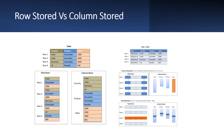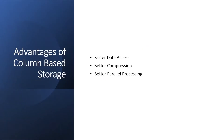Row-based tables have disadvantages in analytical applications where aggregations are used and faster search and processing are required — row storage is not suggested in those cases. In a row table, all the data in a row has to be read even if the requirement is to access data from only a few columns. We have already discussed the advantages of column-based storage.